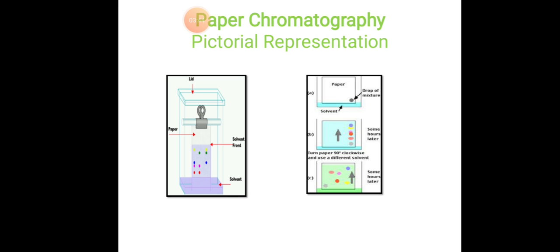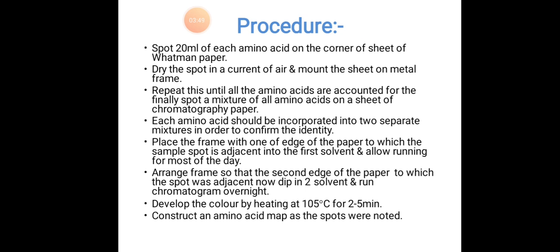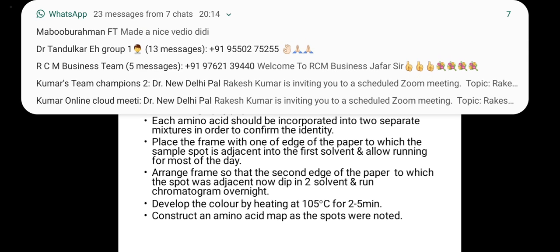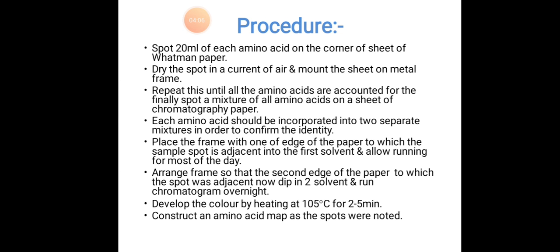Procedure: Spot 20 ml of each amino acid on the corner of sheet of Whatman paper. Dry the spot in a current of air and mount the sheet on metal frame. Repeat this until all the amino acids are accounted for. Finally, spot a mixture of all amino acids on a sheet of chromatography paper.